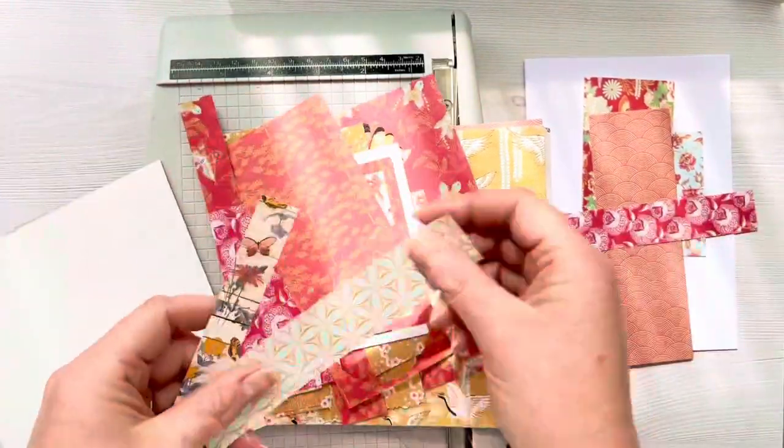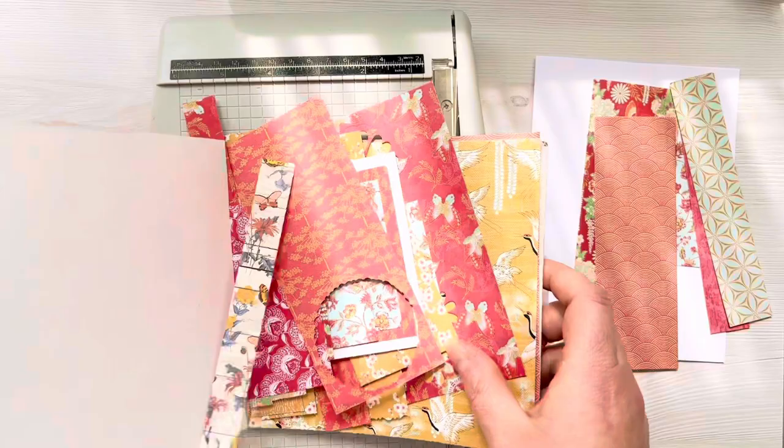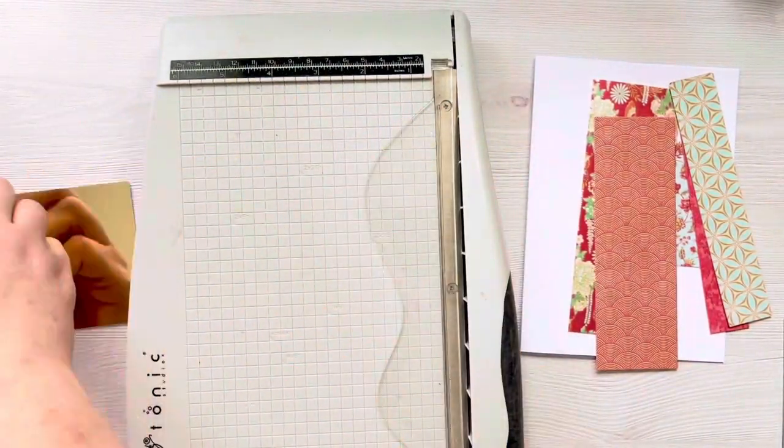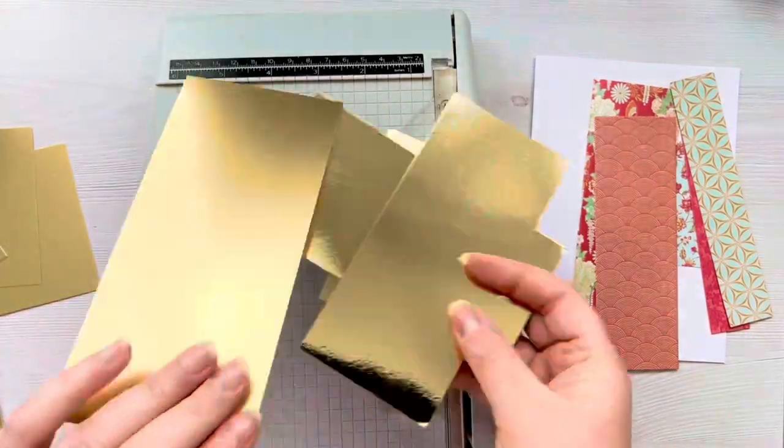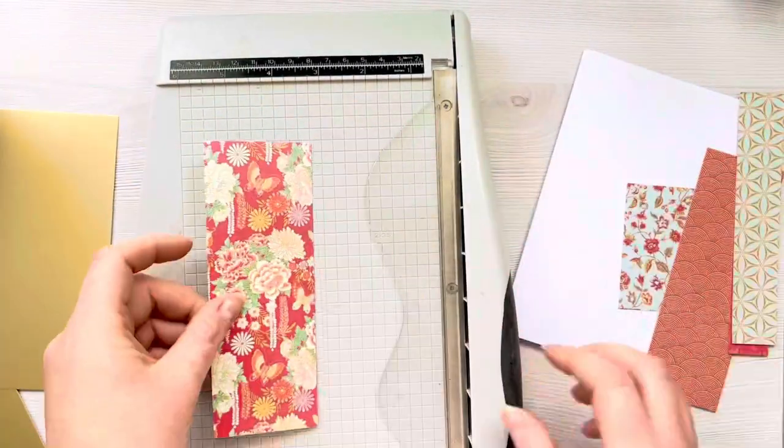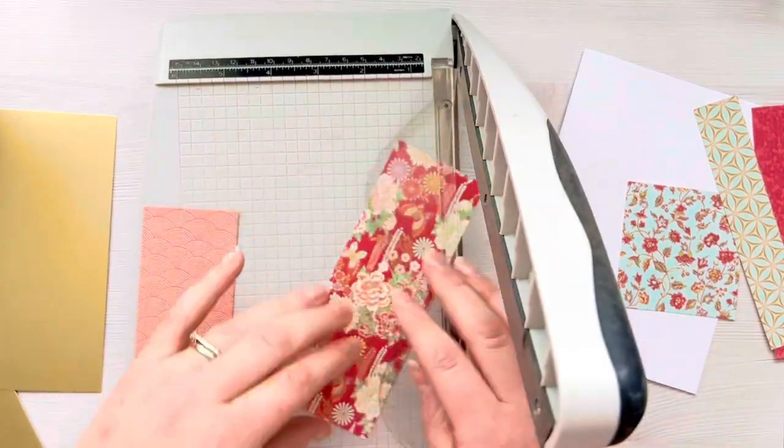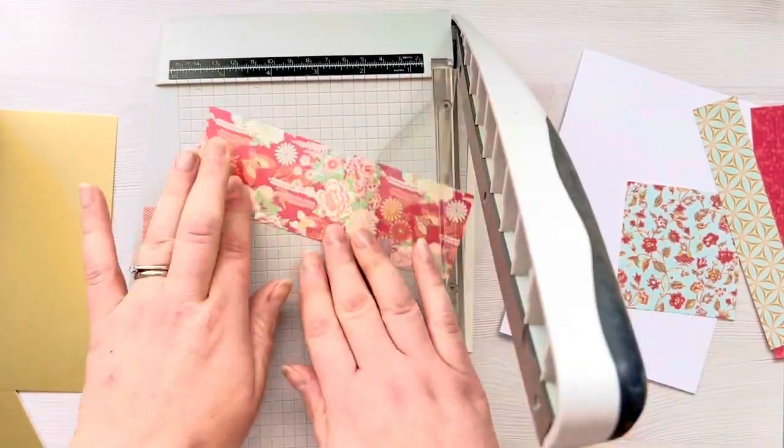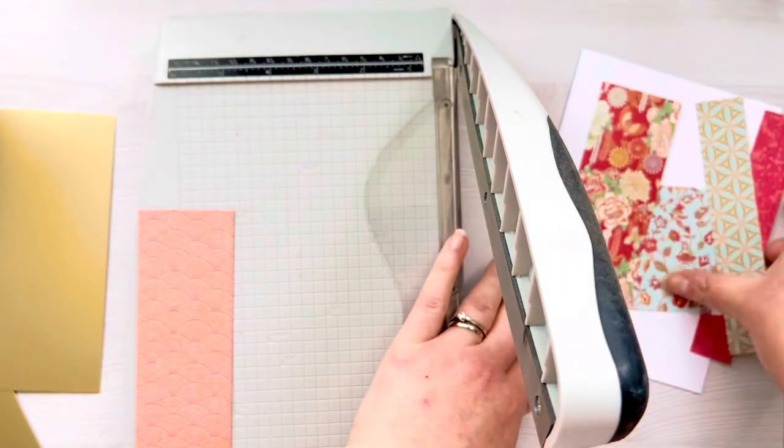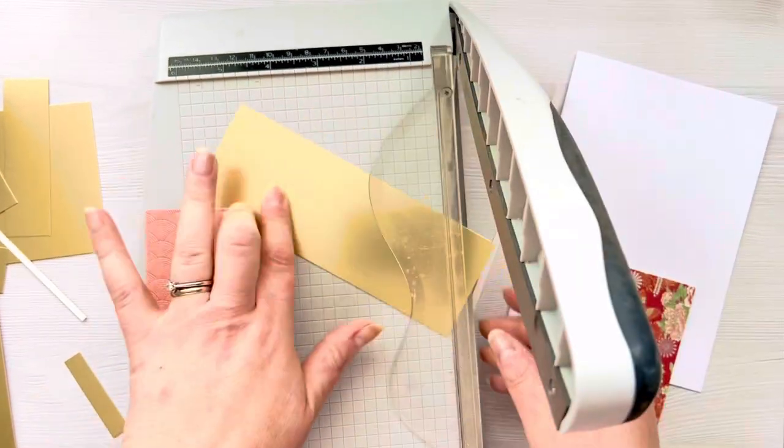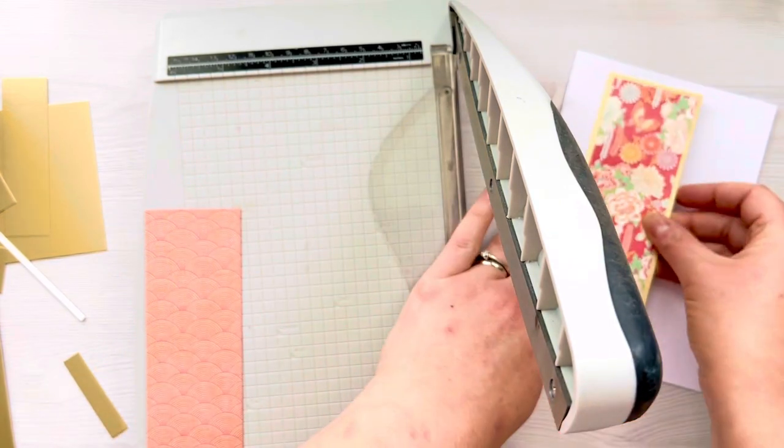I'm going to start off with the Floral Fusion paper pad and I've got quite a few strips and a square that will be ideal for this card sketch. I'm just going to pick out some of those patterned pieces of paper. I've got my paper trimmer ready and I'm going to be working to make these measurements fit a 5x7 card blank.